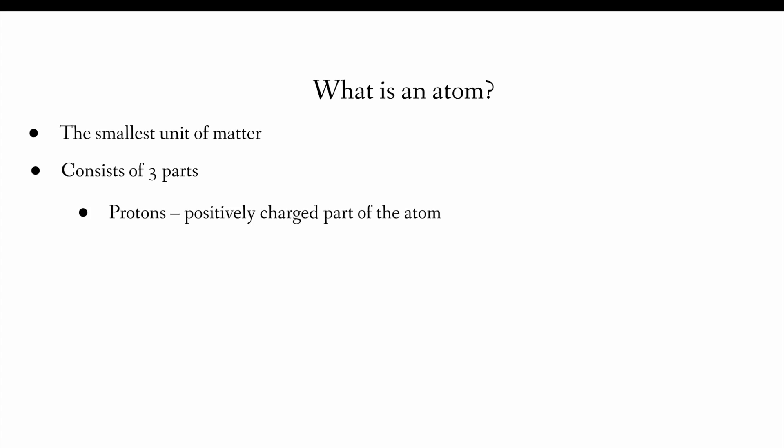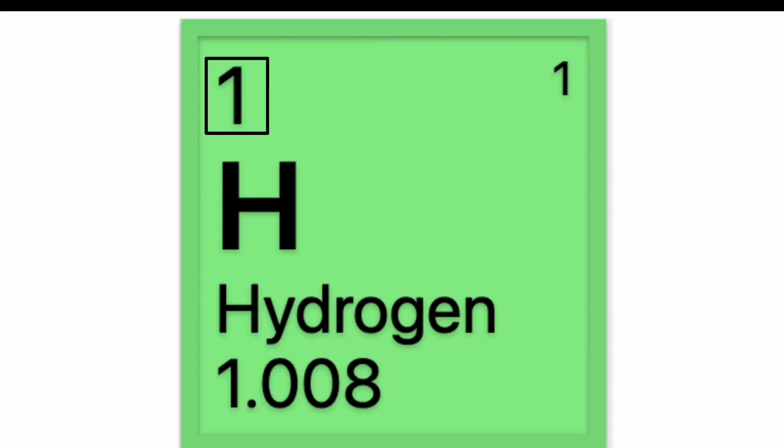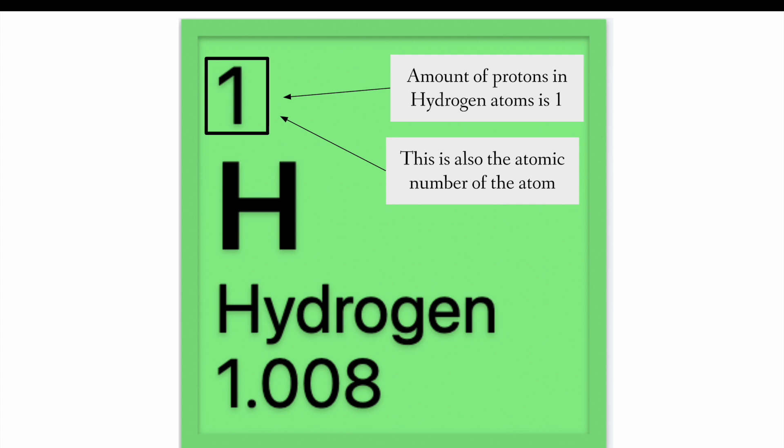They are the positively charged part of the atom. And each atom has a different amount of proton. So, let's focus on the protons piece first. This box is highlighting the atom's atomic number. And this shows the amount of protons. The amount of protons found in hydrogen atoms is one. And this is also the atomic number of the atom. It's on purpose because every atom has its own unique atomic number and every atom has its own unique amount of protons. The atomic number of an atom will never change.